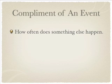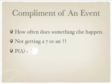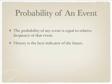The complement of an event is basically how often does something else happen — in this case, not getting a 7 or 11. We represent this mathematically as: the probability of event A equals 1 minus the probability of the complement. The probability of any event is equal to the relative frequency of that event. History is the best indicator of the future — keep that in mind.